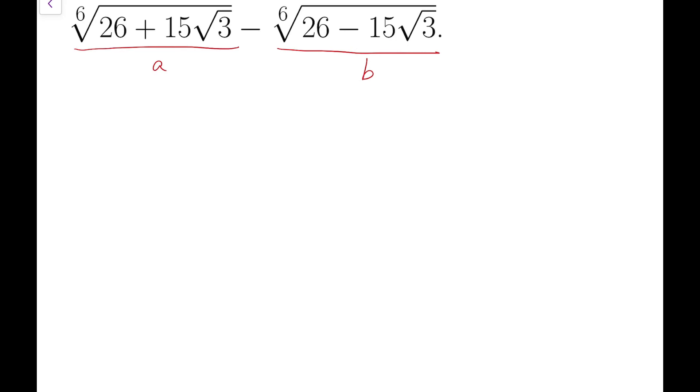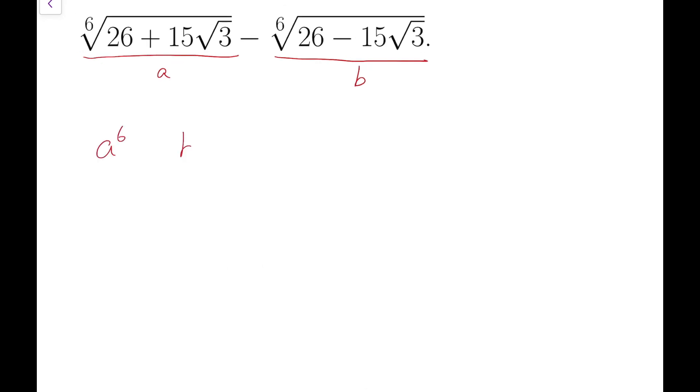The first one is about A^6 and B^6, because A and B are both 6th roots, so A^6 plus B^6 will cancel out the 6th root signs. Now when they are added together, it is actually 52, because 2 times 26 equals 52, and the √3 terms are canceled out.